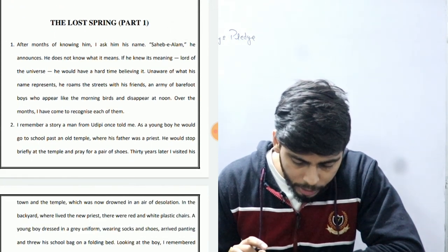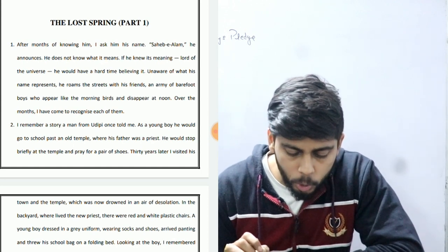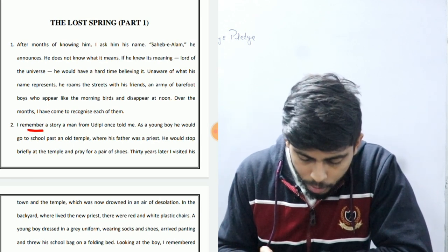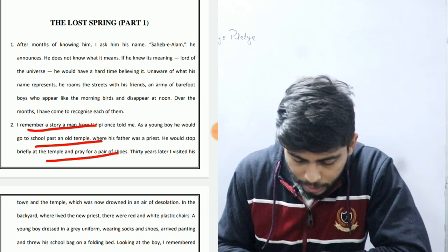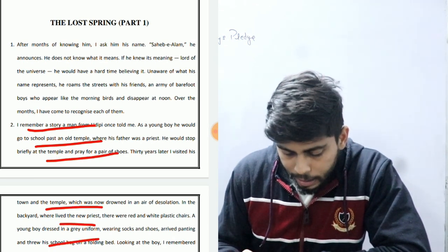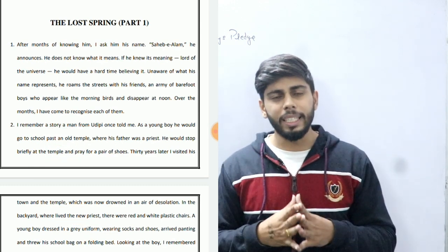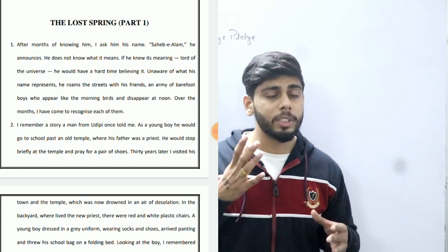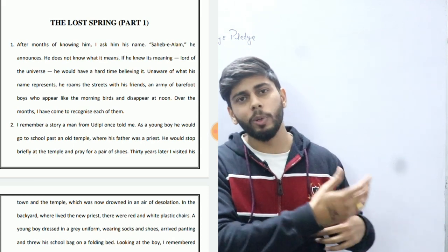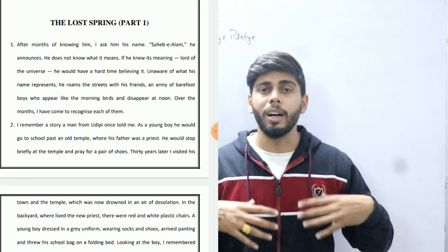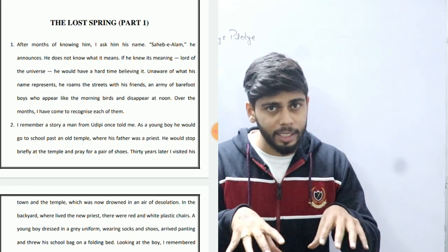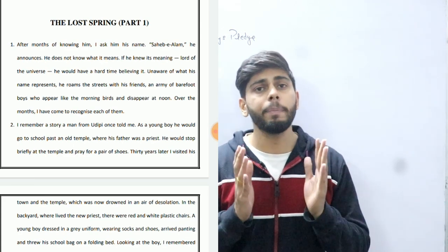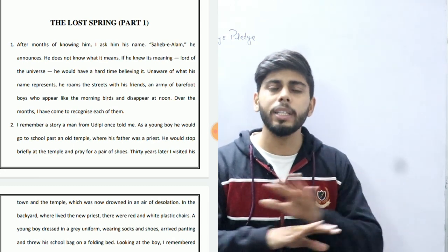The second paragraph: 'I remember a story a man from Udipi once told me — as a young boy he would go to school past an old temple where his father was a priest.' In 1971, Sahib's family migrated from Bangladesh. They didn't have a fixed shelter; they started in a tent and then settled on the border of Delhi. Everything was destroyed by storms, and that is why they came here.